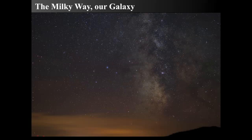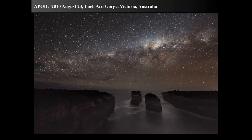The Milky Way is our home galaxy. That band of light looks diffuse with what appears to be smoke in front of it — that's not smoke, that is dust in the Milky Way itself. Here's an astronomy picture of the day taken from Lockhart Gorge, Victoria, Australia on August 23rd, 2010, of the center of the Milky Way. We see a dusty band going across, with stars embedded all around, and a brighter area towards the galactic center.